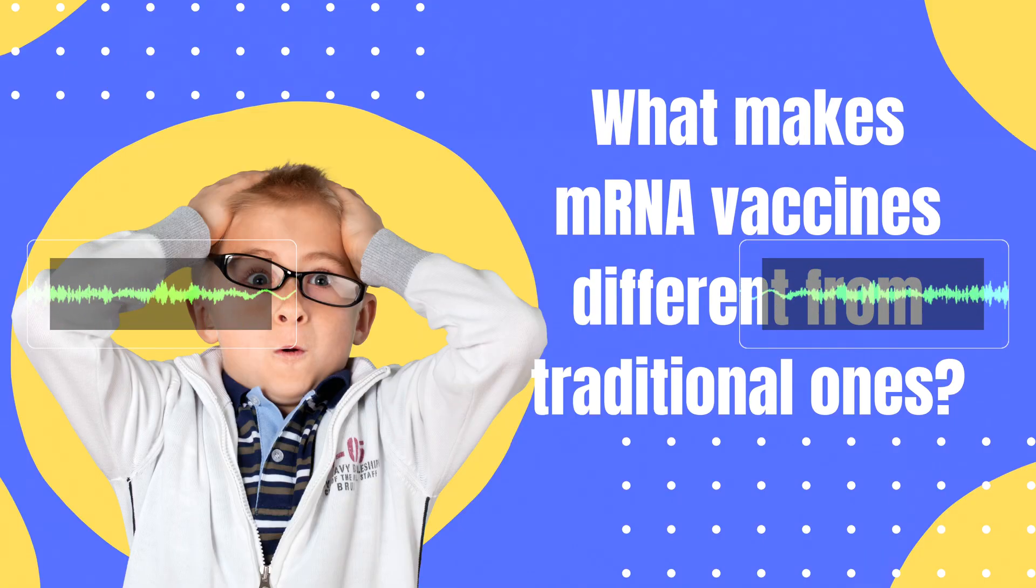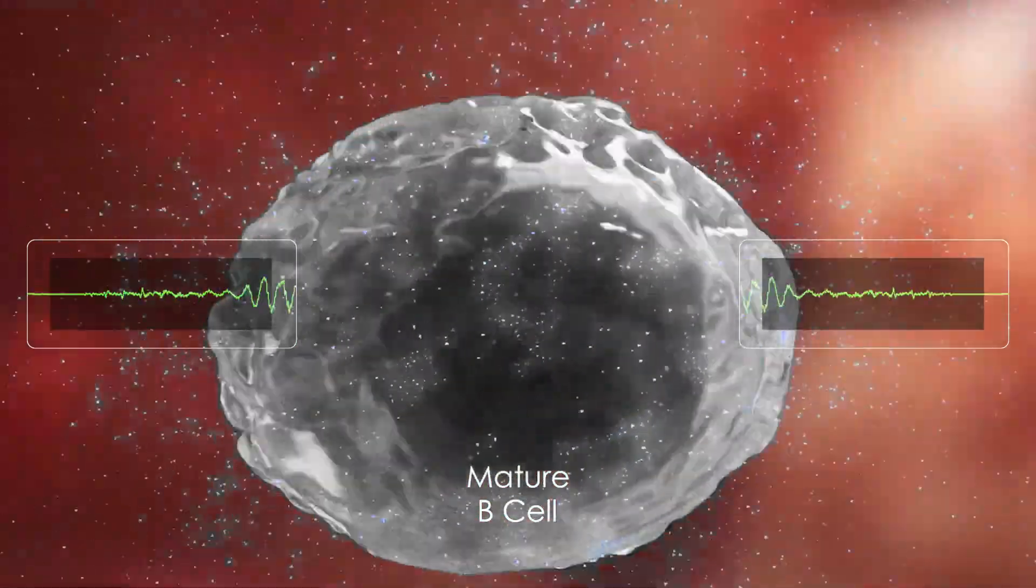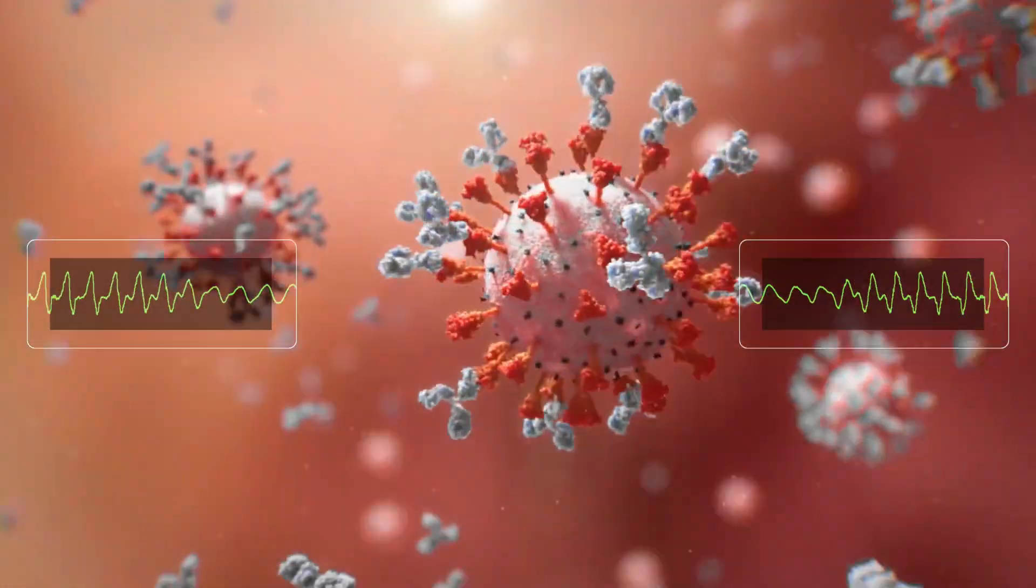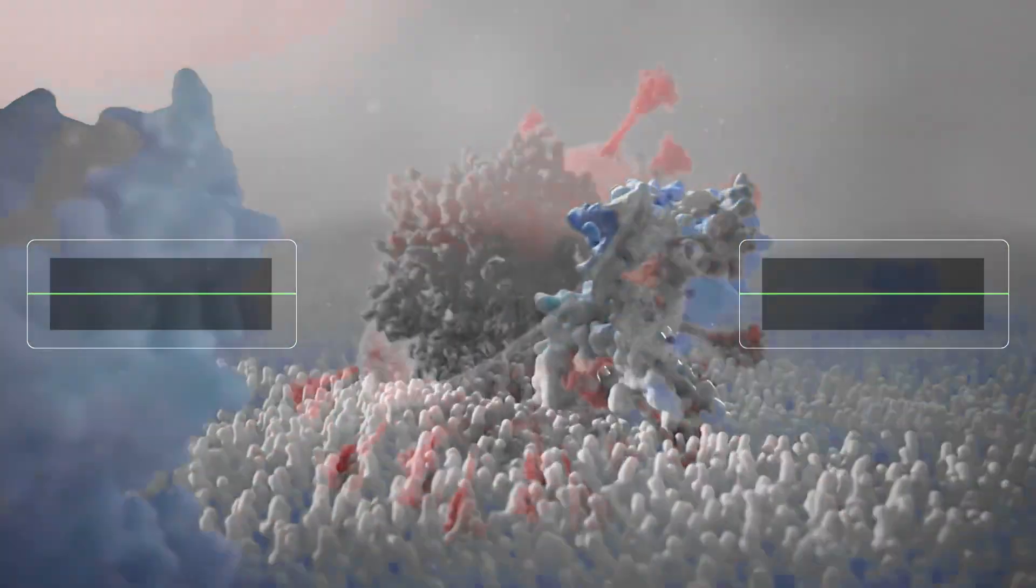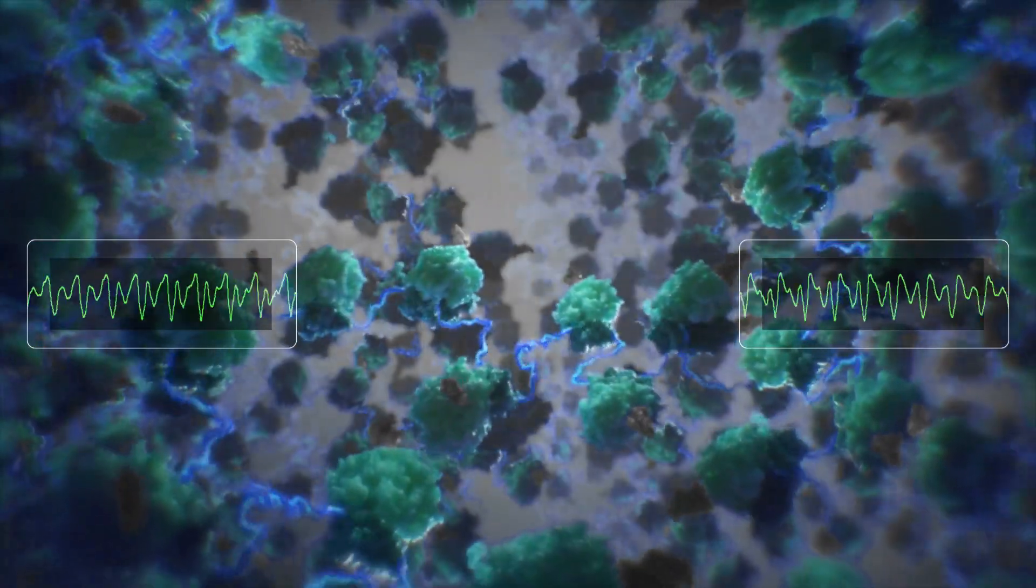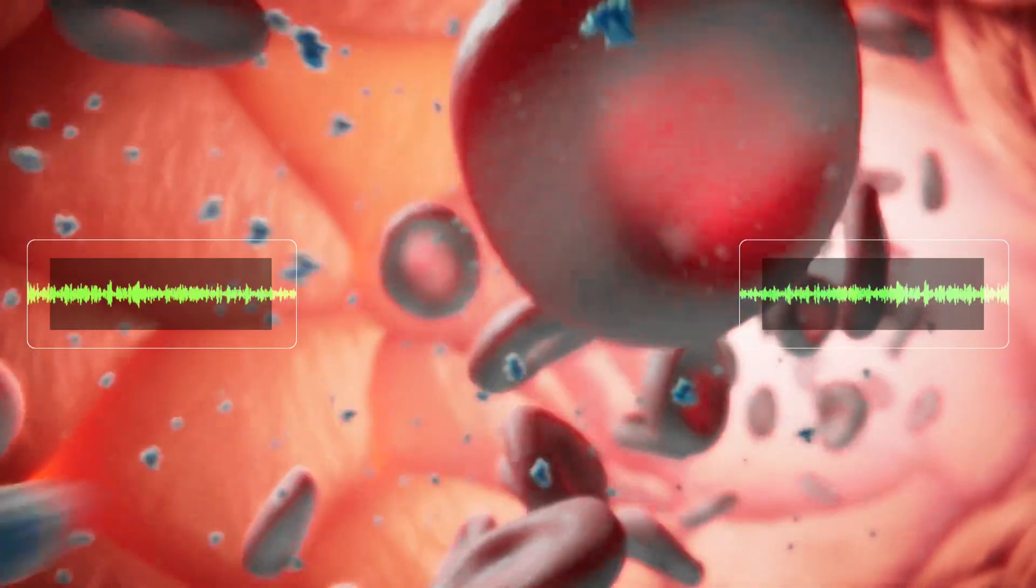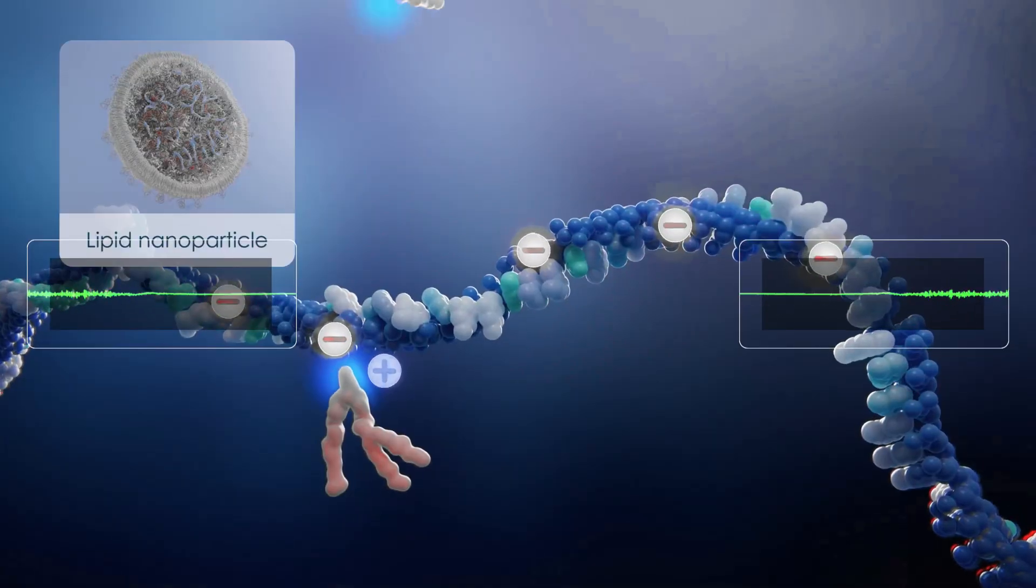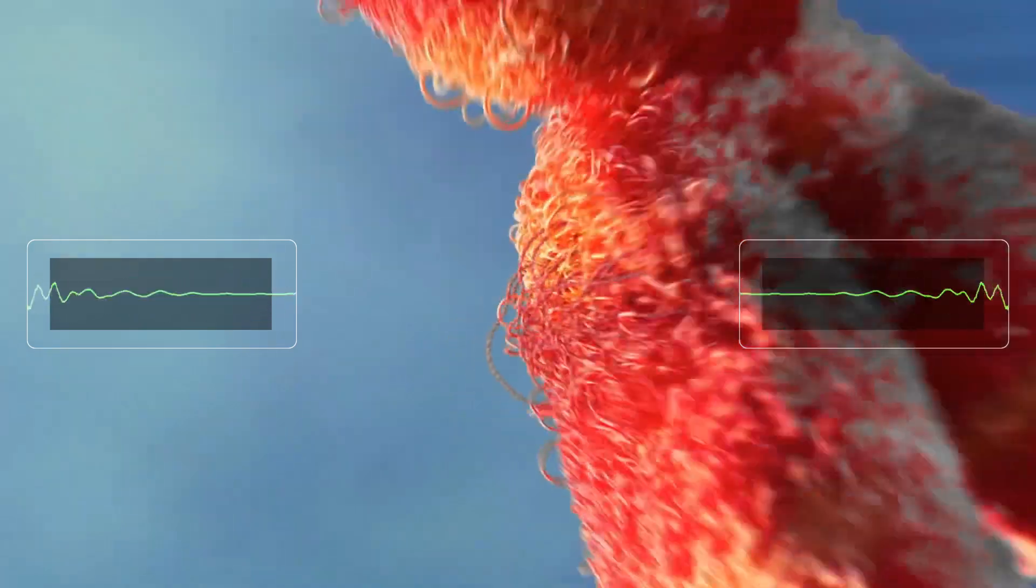What makes mRNA vaccines different from traditional ones? Traditional vaccines deliver a weakened or inactivated germ or a fragment of it to help your immune system recognize and respond to the threat. In contrast, mRNA vaccines deliver genetic instructions in the form of messenger RNA. These instructions teach your cells to produce a harmless piece of the virus. The immune system then learns how to fight it.